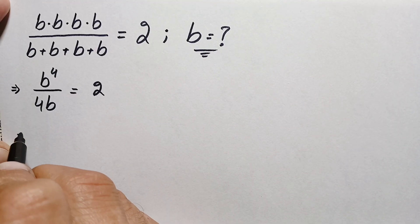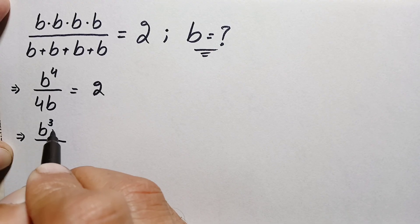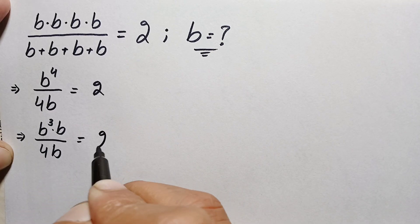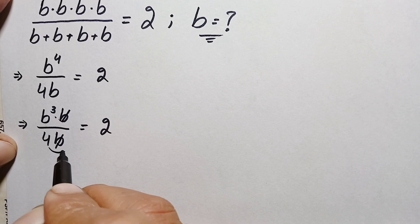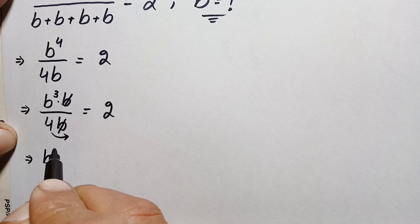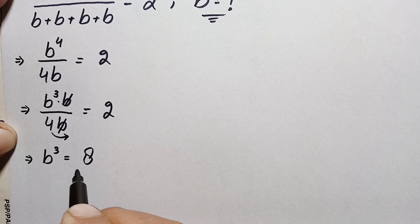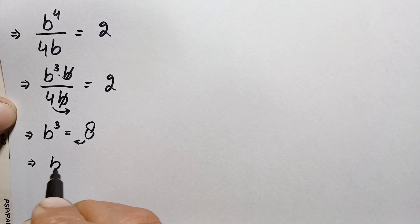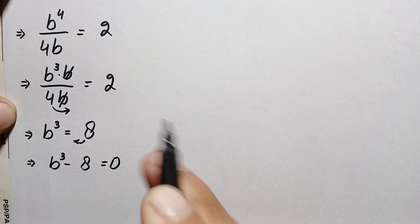Next, we rewrite the left hand side: b raised to power four is the same as b cubed times b, divided by 4b, equal to 2. We cancel b with b, and move 4 to the right hand side, giving us b cubed equals 2 times 4, which is 8. Taking 8 to the left hand side, we get b cubed minus 8 equals zero.